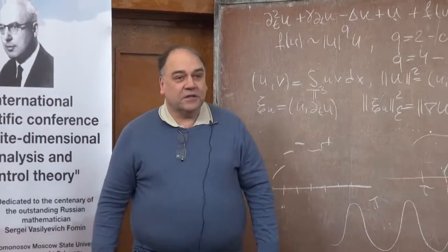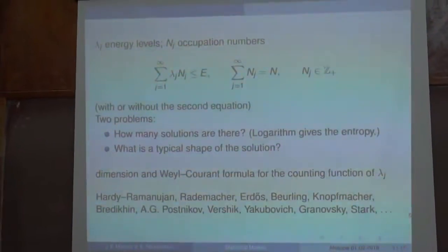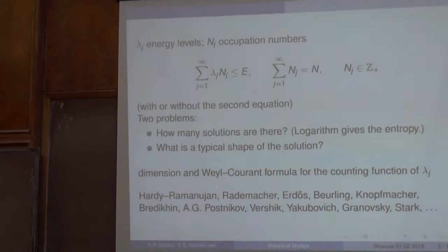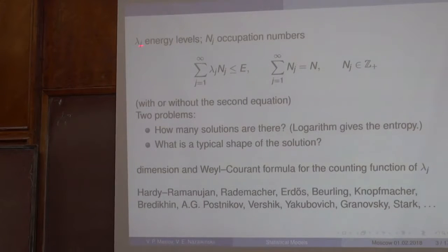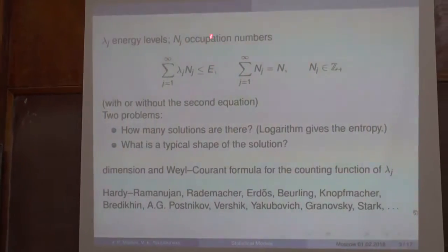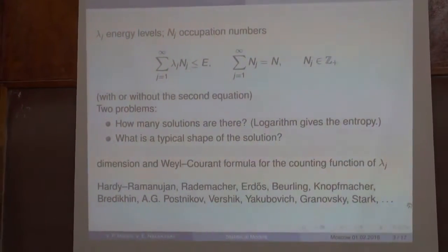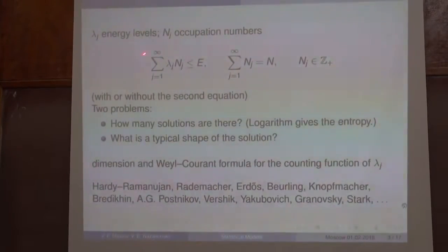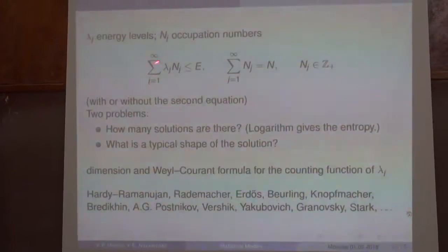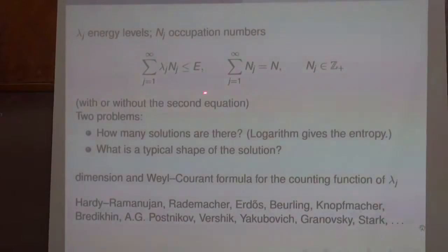Let's consider some system of non-interacting particles, and each particle can occupy various energy levels. Let lambda j be the energy value for these energy levels, and n_j be the occupation numbers. That is, n_j is the number of particles sitting on the energy level lambda j. We consider the system where the total energy doesn't exceed E, and the total number of particles is equal to N. If we don't fix the number of particles, then we omit the second relation and use only the first one.